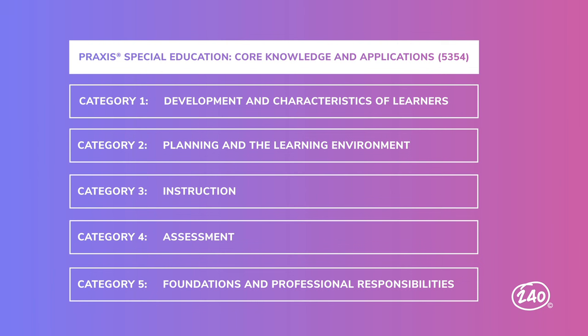We've already covered the material that makes up almost half your test. Let's keep going through the final three categories. We'll head back to Category 1: Development and Characteristics of Learners. It can be broken into three smaller chunks: Human Development, Developmental Disabilities and Delays, and Impact of Disabilities.